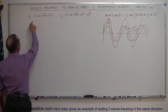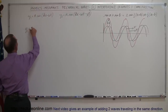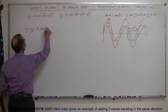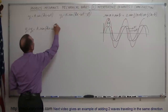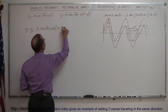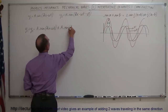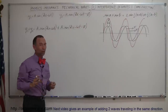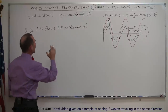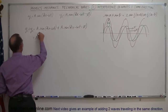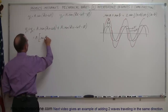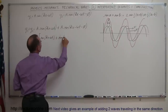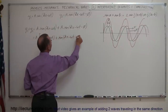If I'm adding Y1 plus Y2, that is the same as taking A times the sine of kx minus omega t, and adding to that the second wave, which is A times the sine of kx minus omega t minus phi. The next thing I'm going to do, just to make it simpler, is factor out the A, so this equals A times the quantity: sine of (kx minus omega t) plus sine of (kx minus omega t minus phi).